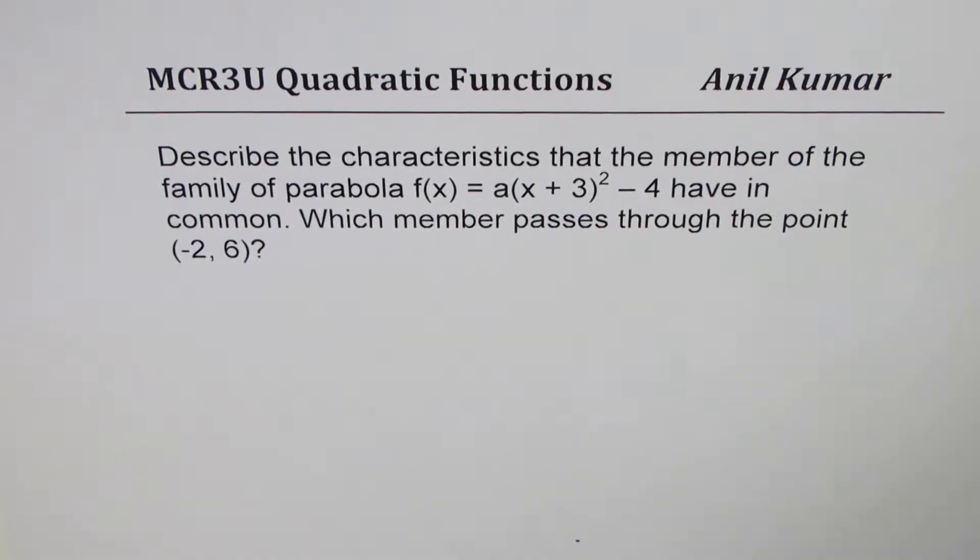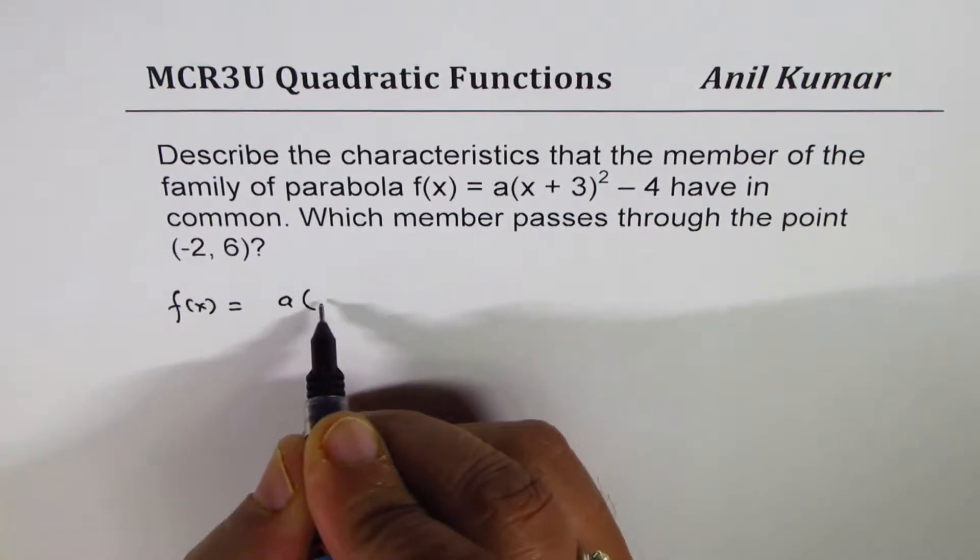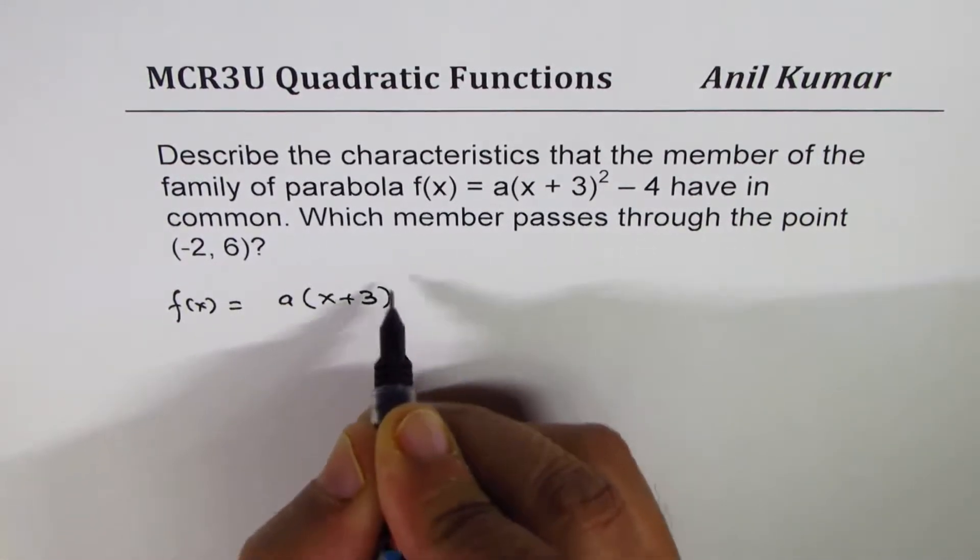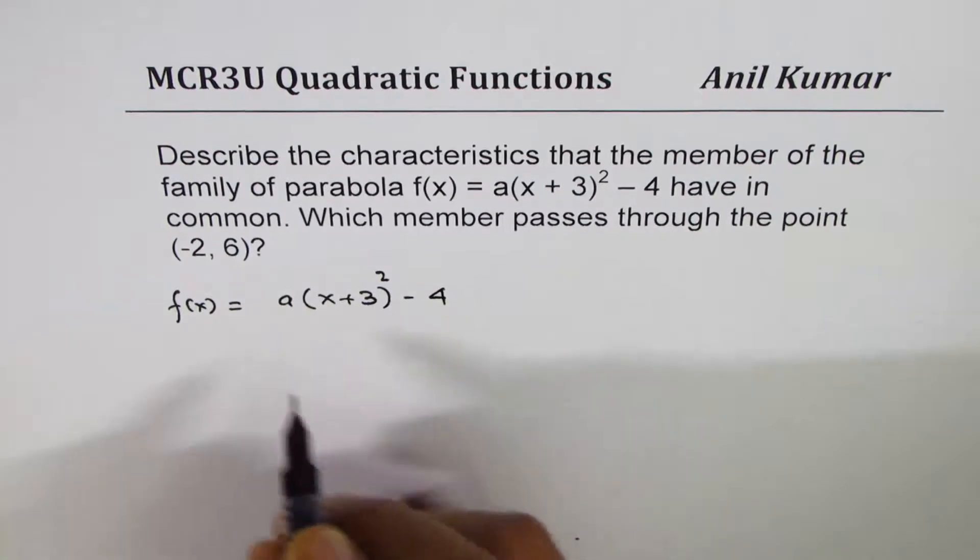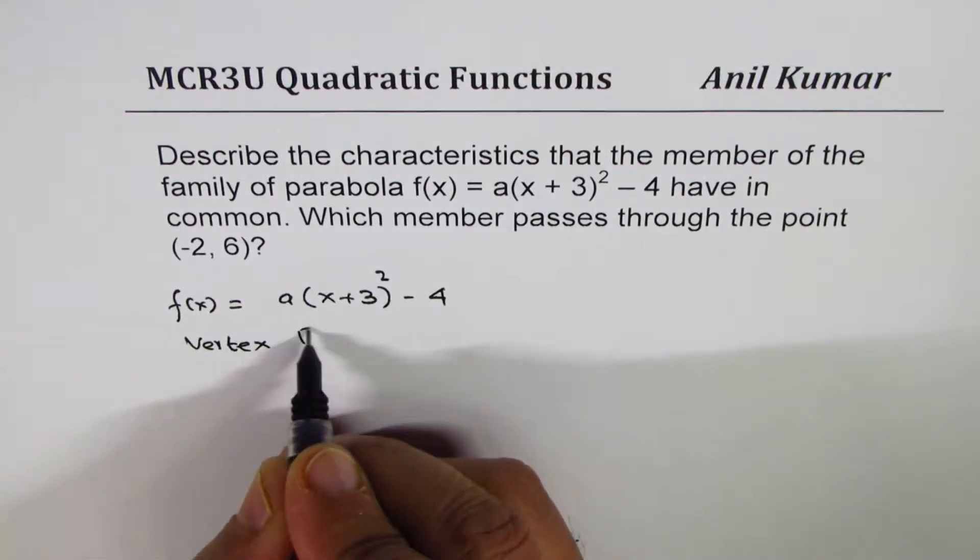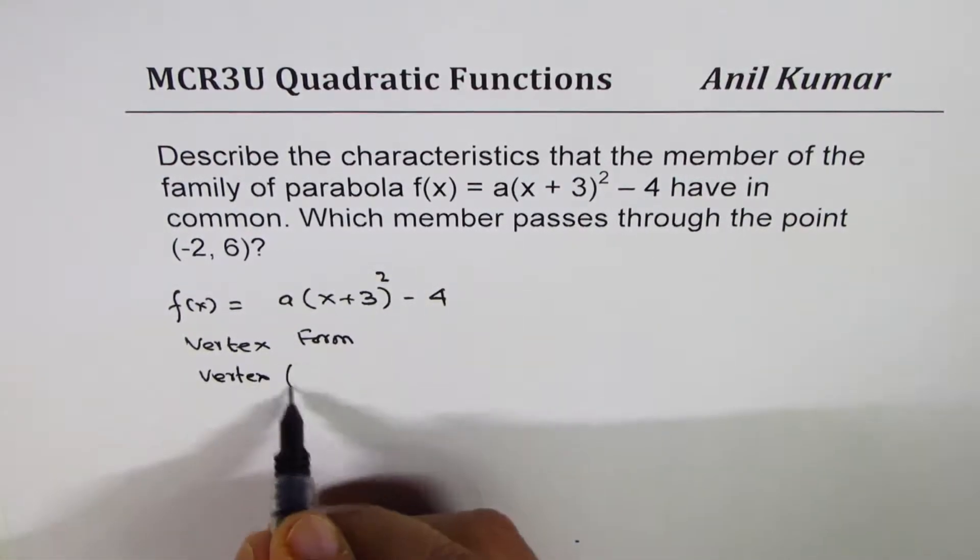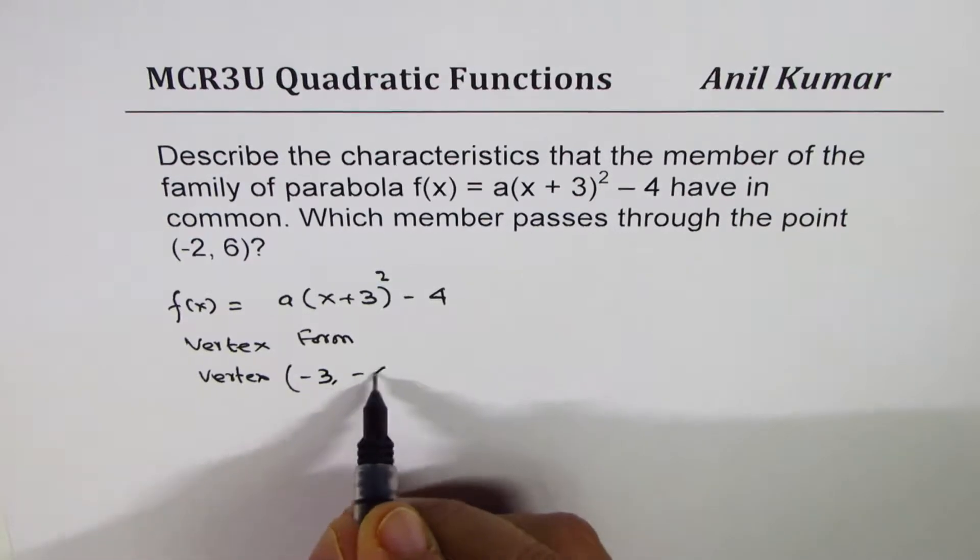What we're given here is a function f(x) = a(x + 3)² - 4. This is called the vertex form. This is vertex form of parabola where the vertex is at the point (-3, -4).